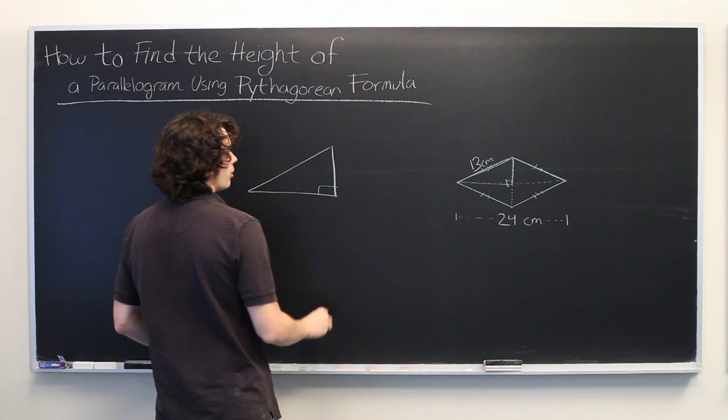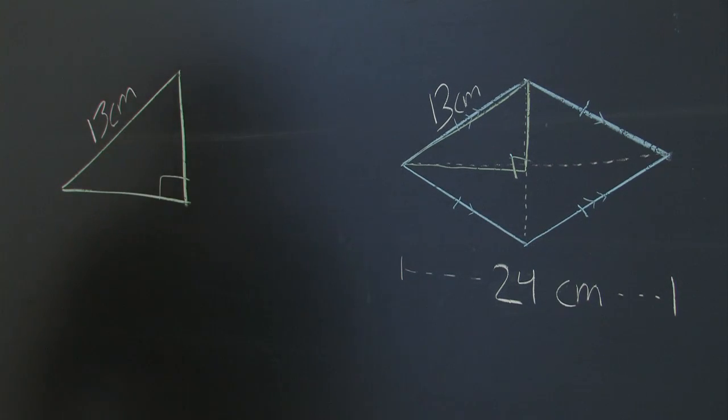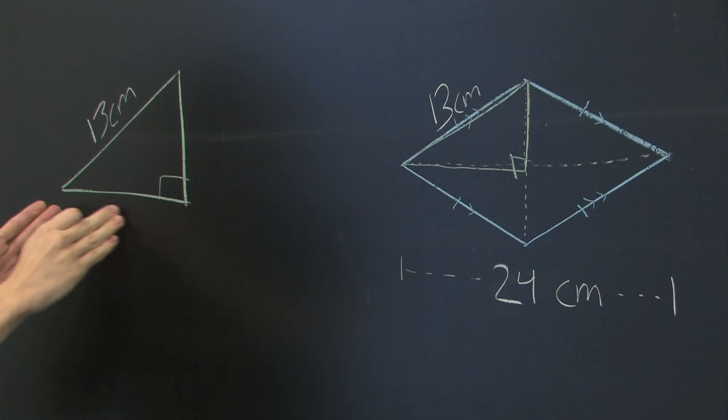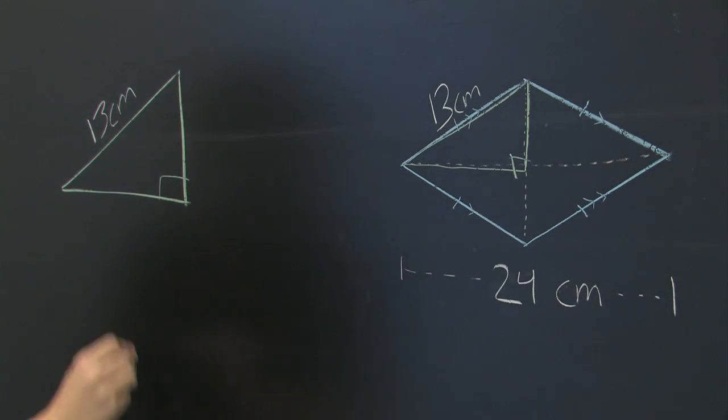We're already told that the hypotenuse is 13 centimeters, and the base of this triangle is going to be one-half of the width. So that's going to be 12.